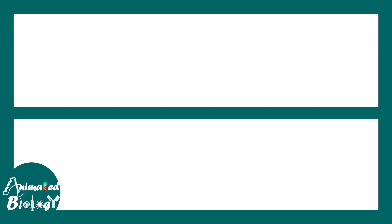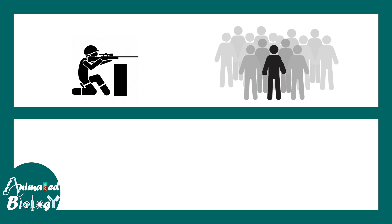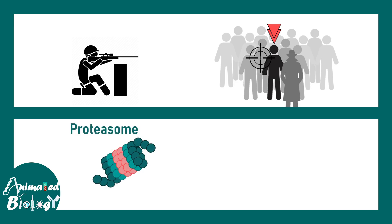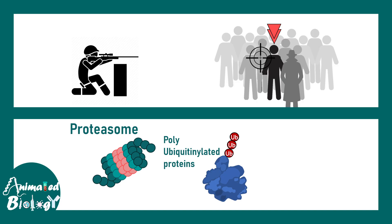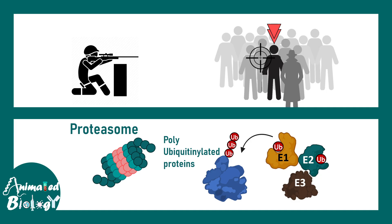This pathway is similar to a real-life scenario: imagine a sniper has to kill one particular person in a crowd, but how does the sniper recognize who the target is? Until and unless somebody tags that person, it's impossible. A spy points out the target, and then the sniper can act. Similarly, the proteasome is the sniper — it doesn't know which protein to degrade or whether that protein is non-functional, aggregated, or misfolded. The proteasome's job is just to degrade.